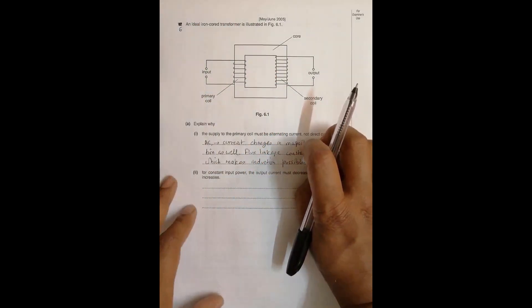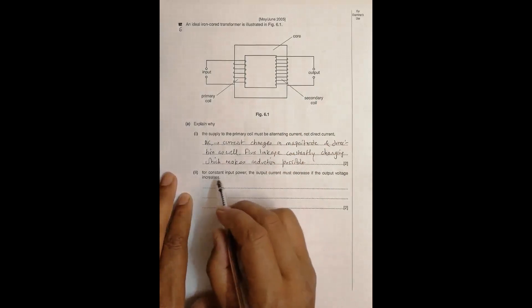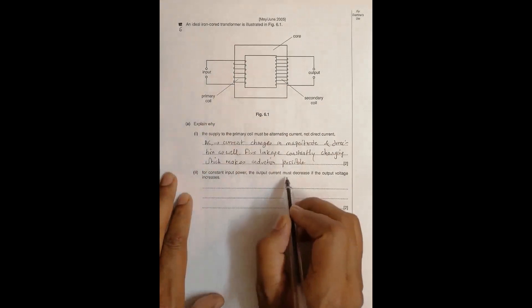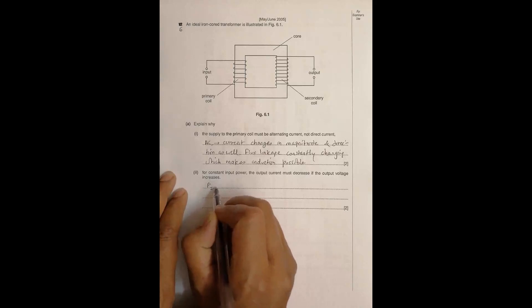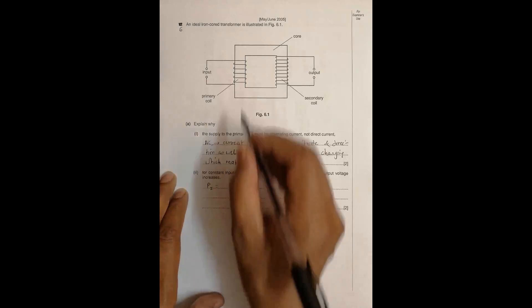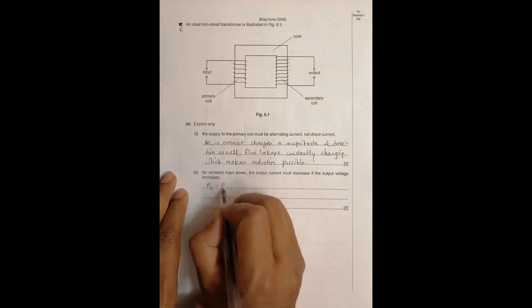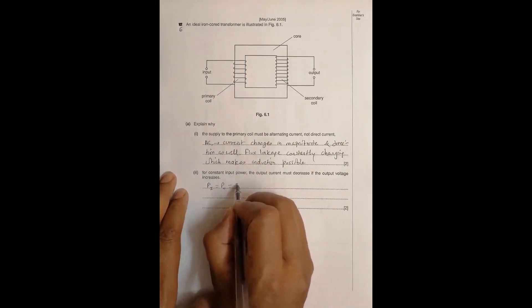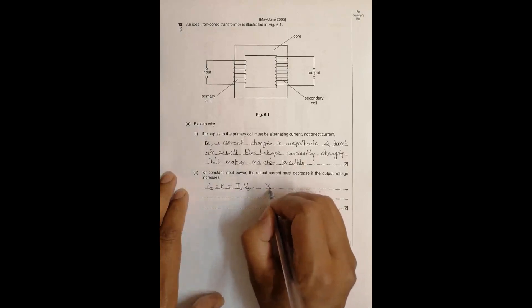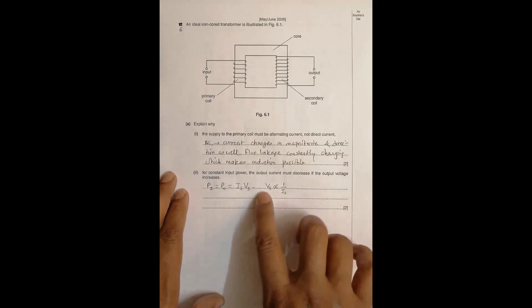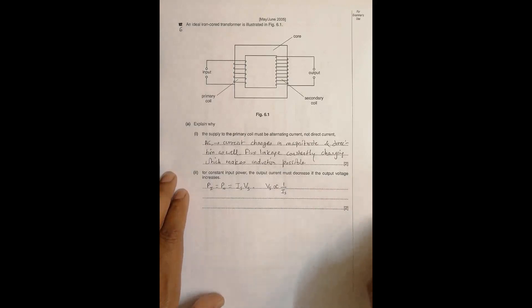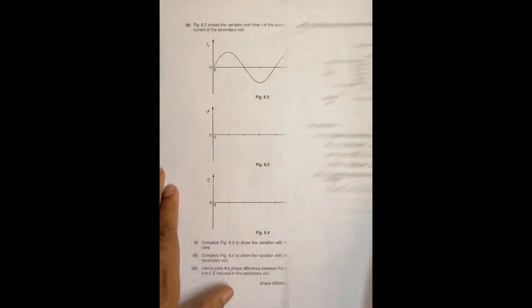For constant input power, the output current must decrease if the output voltage increases. If we assume 100% power transfer to the output, the output power equals V_secondary times I_secondary. This means V_secondary is inversely proportional to I_secondary: if I_secondary increases, V_secondary decreases, and if I_secondary decreases, V_secondary increases, as demanded by the question.